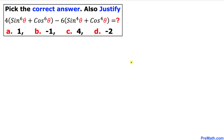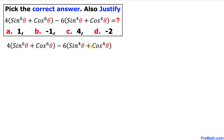Welcome to Pre-Math. In this video tutorial we are going to find the value of this given trigonometric problem: 4 times sine to the power 6 theta plus cosine to the power 6 theta, minus 6 times sine to the power 4 theta plus cosine to the power 4 theta. We have been given four options, so let's go ahead and get started.